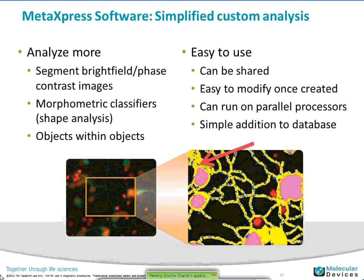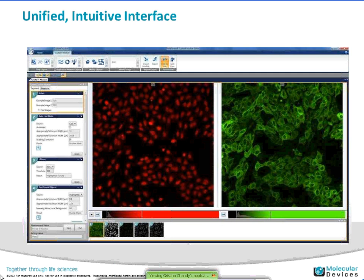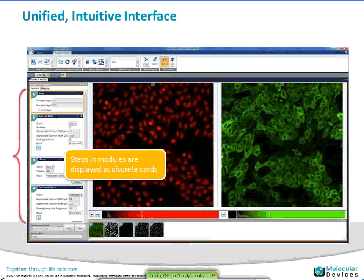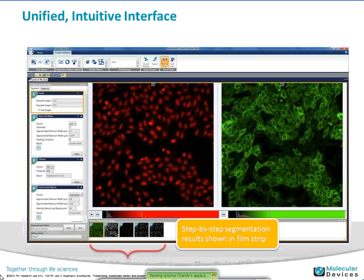The interface for the custom module side of things is a unified, intuitive interface. You can find your segmentation tools at the bottom and at the top in a ribbon. As you create steps for a module, they show up as discrete cards. Once you've ordered the cards, you do not need to recreate them — you can go in and change parameters inside that card, and you can see your step-by-step segmentation in the panel below so that you don't have to run a macro completely and then see your results. You can see what's happening as you go.